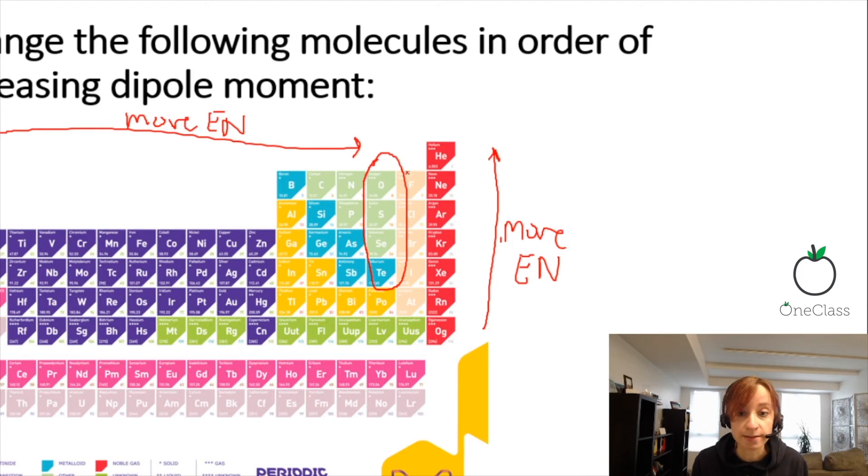What that means is that fluorine is the most electronegative atom in the periodic table. The closer you are to fluorine, the more electronegative you will be.